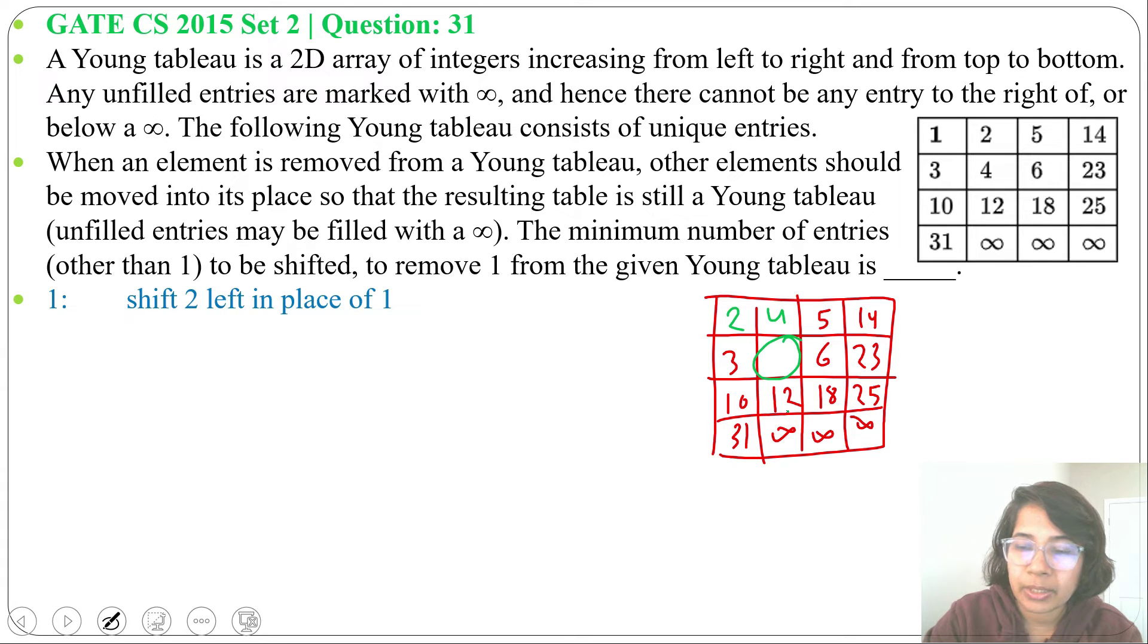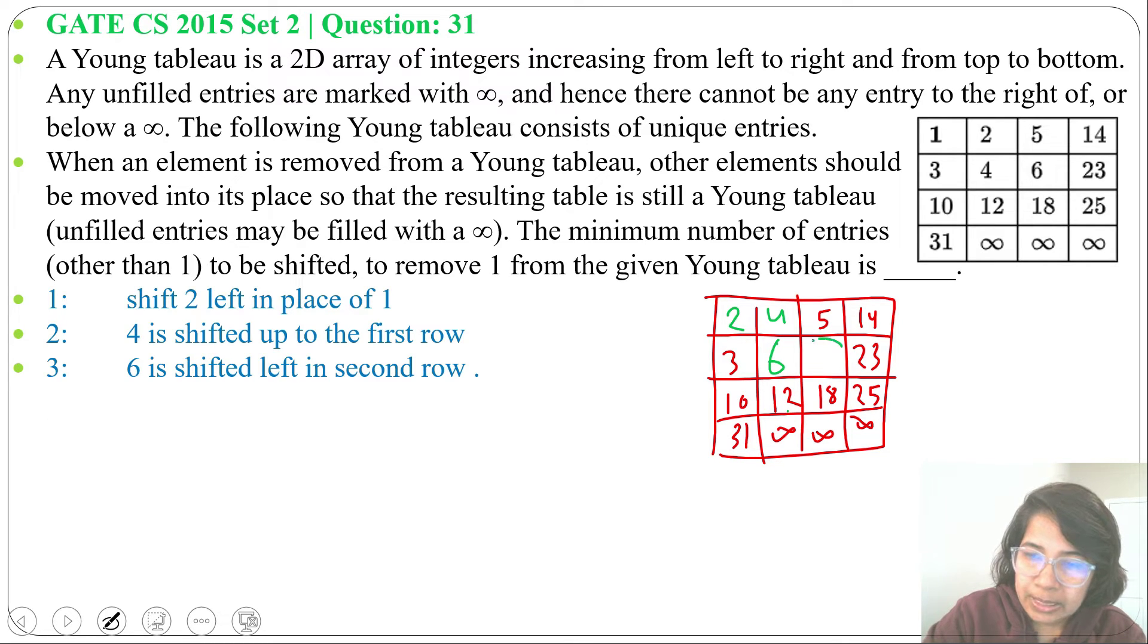We cannot move 12 up as 3, 12, 6, 23 will not be a Young tableau. 6 is not greater than 12. So what we can do, we can move this 6 to the left. Now after moving 6 left, this space is blank.